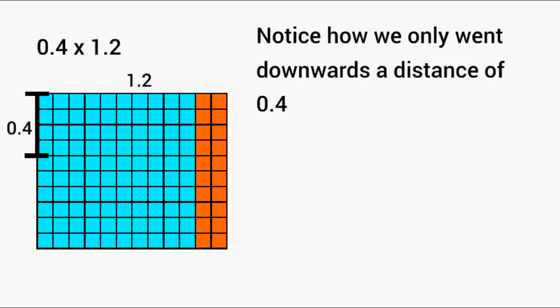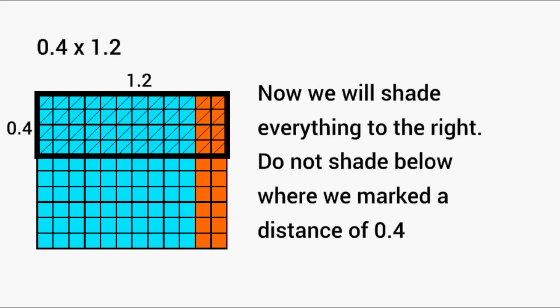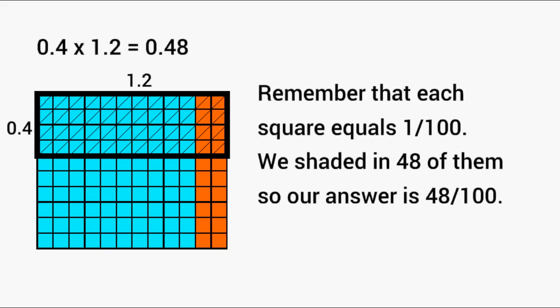What we have to do now is mark off 4 tenths that would represent the length of our rectangle. If we were to count everything inside the border that we just defined, we would have 48 squares, and each square is 1/100, and 48 groups of 1/100 is 48 hundredths, which can be expressed as 0.48.